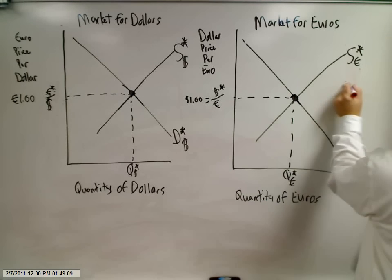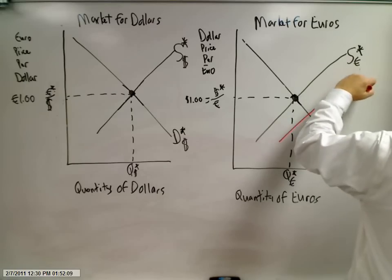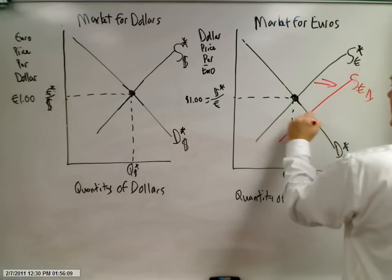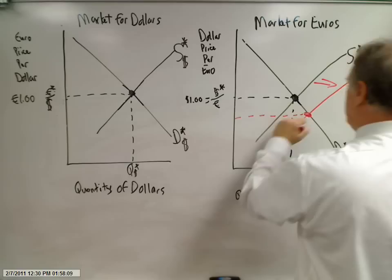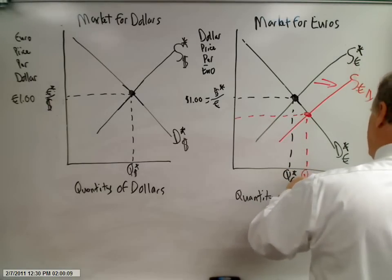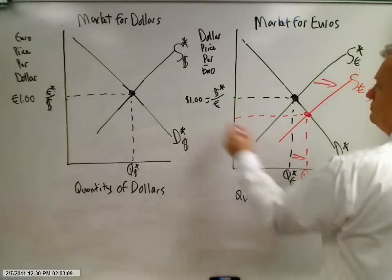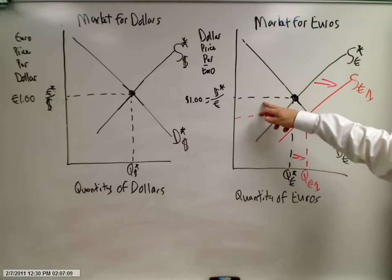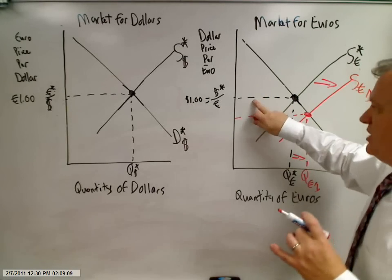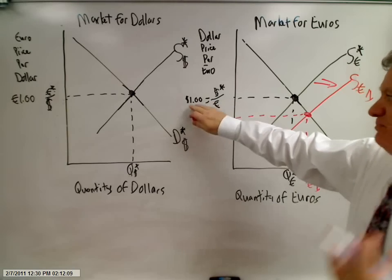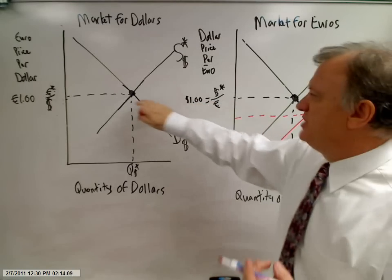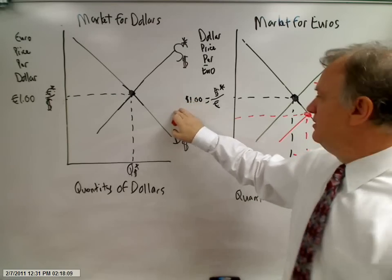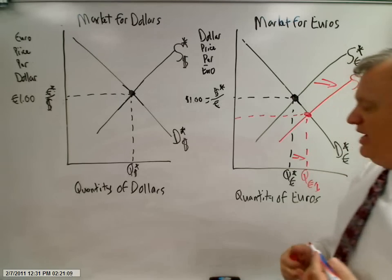So in the market for euros, our supply of euros is increasing. We know when supply increases, the supply curve shifts to the right. The supply of euros shifts to the right and establishes a new market equilibrium — quantity of euros sub 1 — and we have a new price. We started out, just like in the last video, at parity: one euro exchanges for one dollar and one dollar exchanges for one euro. That was until we had this change in relative interest rates.